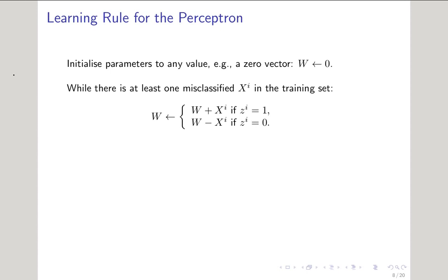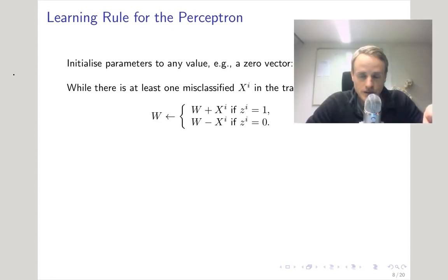For each misclassified point, we remove the value of that point's coordinates from the weight vector if the point is supposed to belong to class 0, and we add the point's coordinates to the weight vector if the point for the class is class 1. It doesn't matter if we switch which classes get added and subtracted in this two-class case as long as we are consistent.